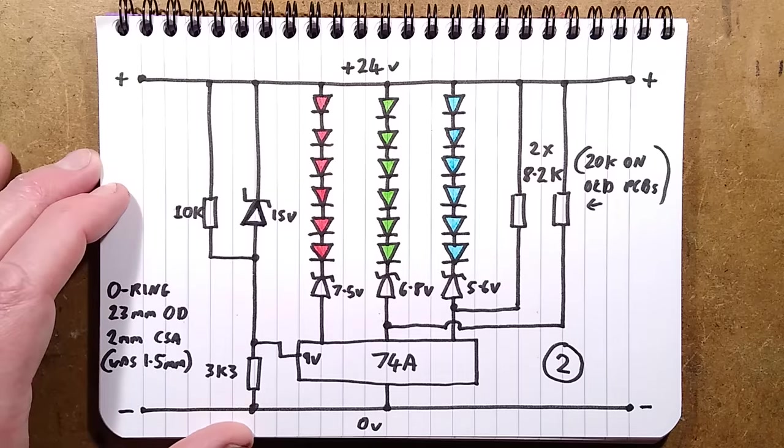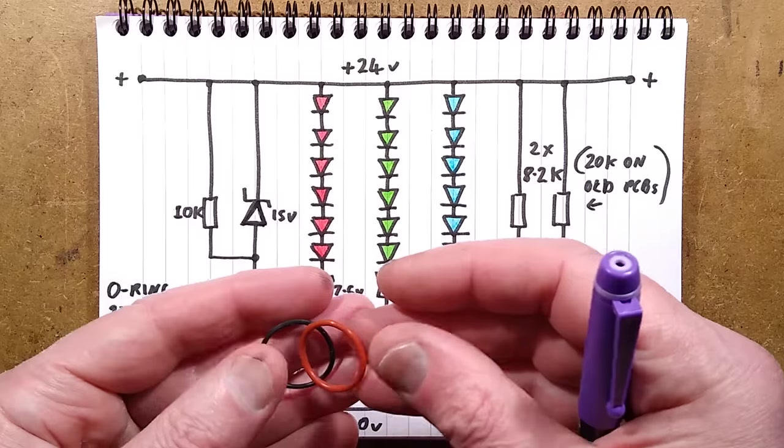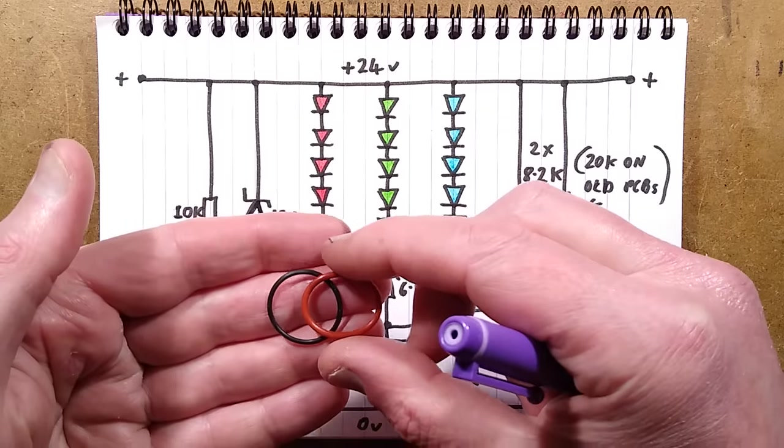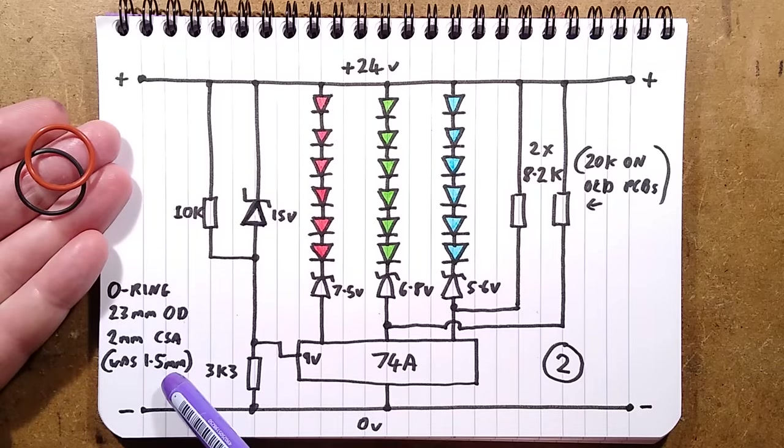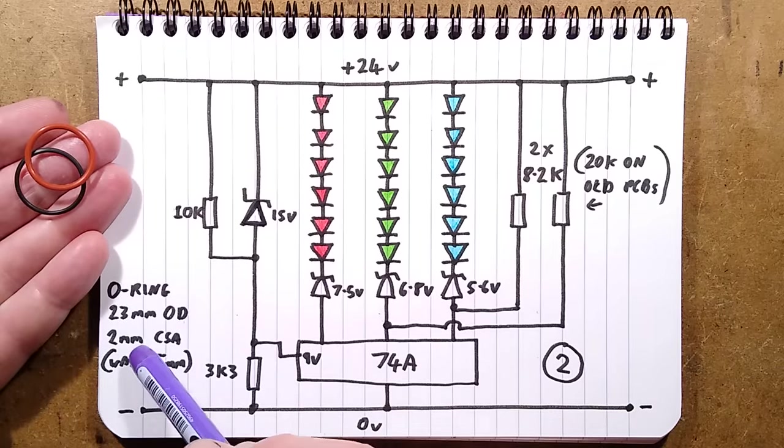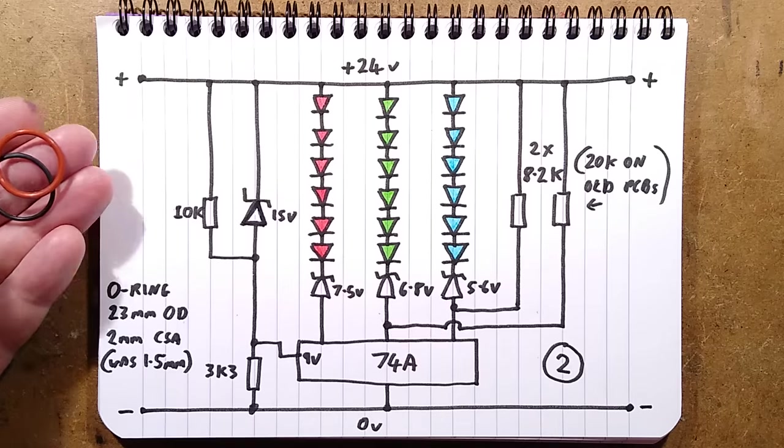So the O-ring, for a start, the outside diameter is very hard measuring a squishy rubber ring without the proper tools but it's around about 23mm outside diameter. The old one was 1.5mm thick, the new one is 2mm thick just to make that tighter seal.